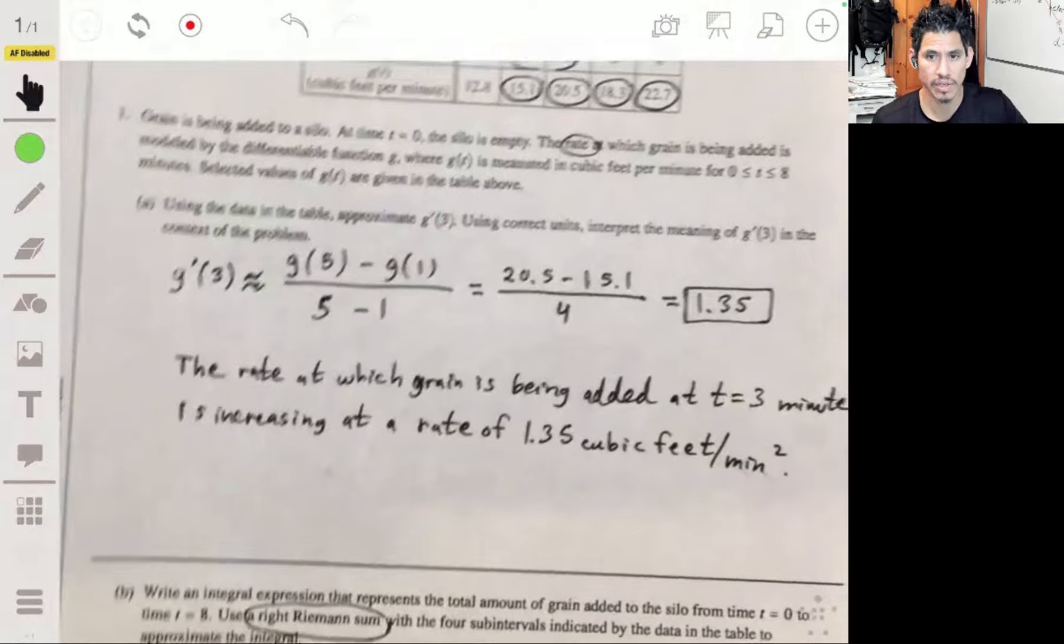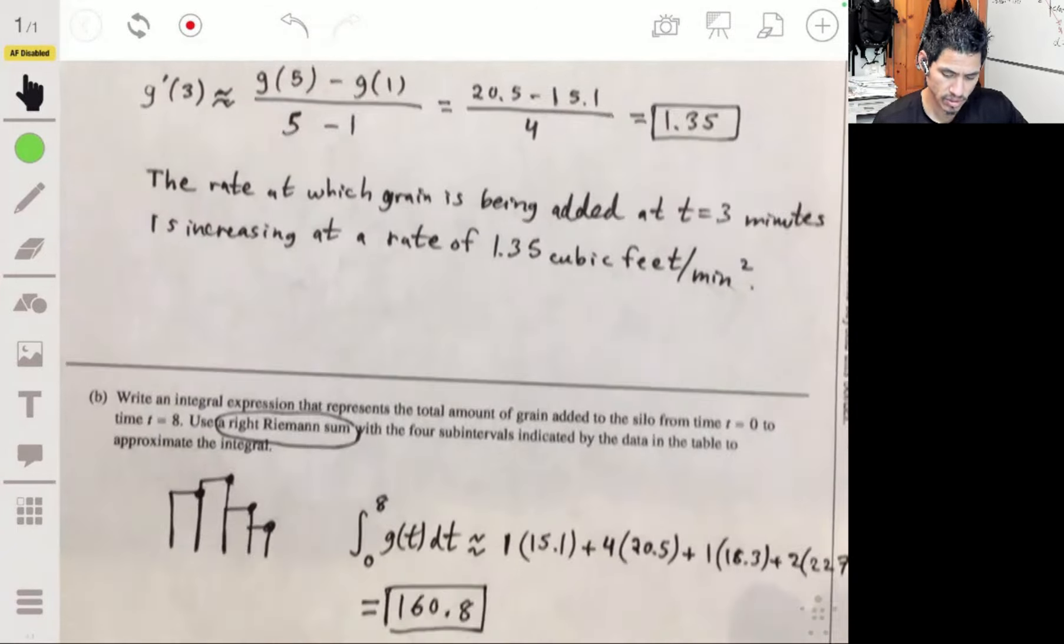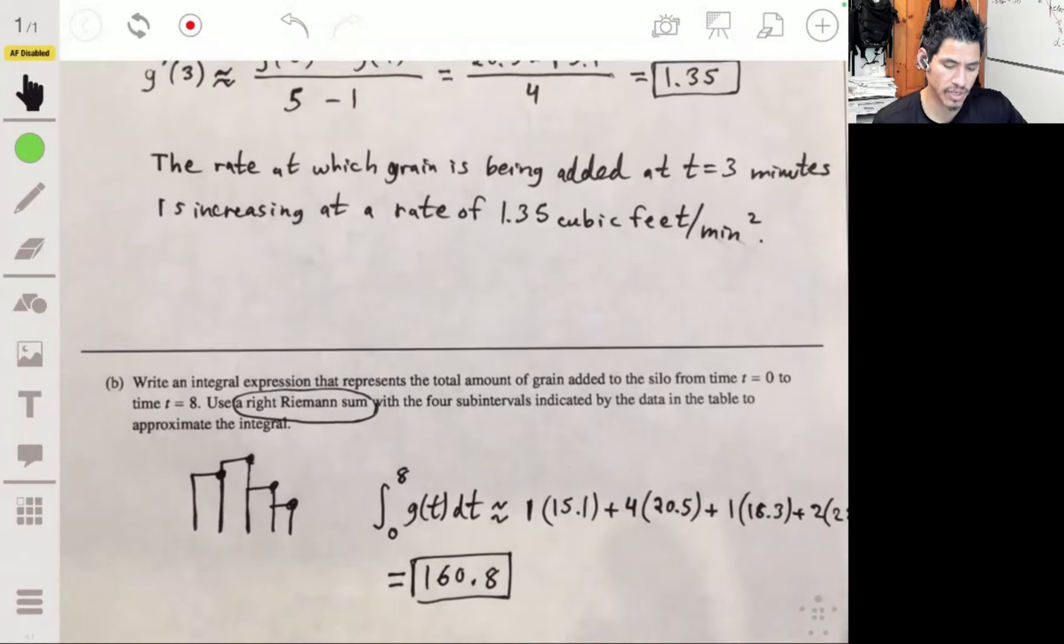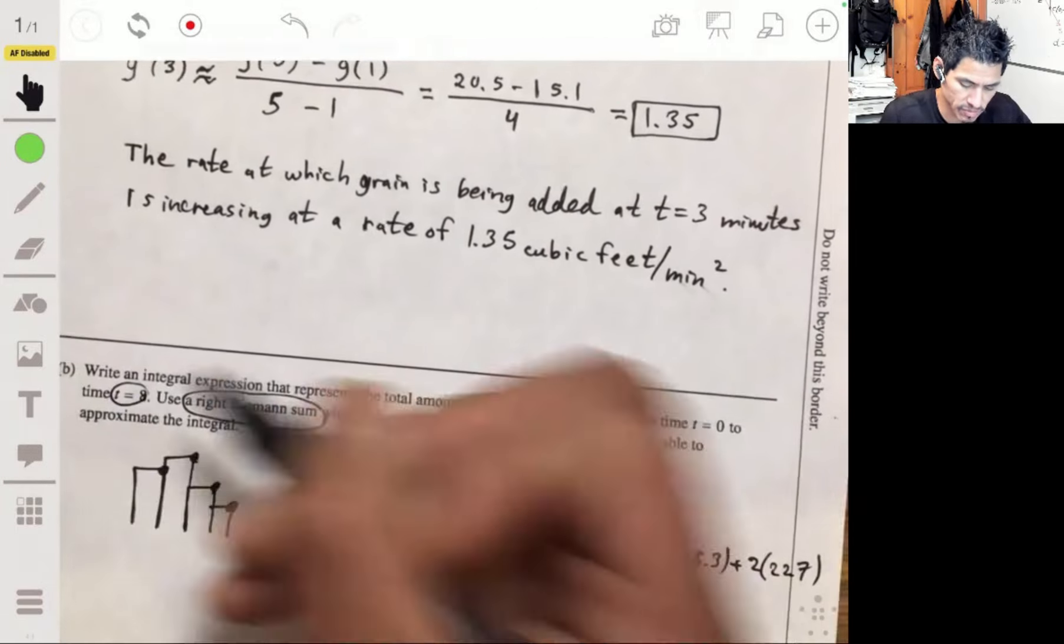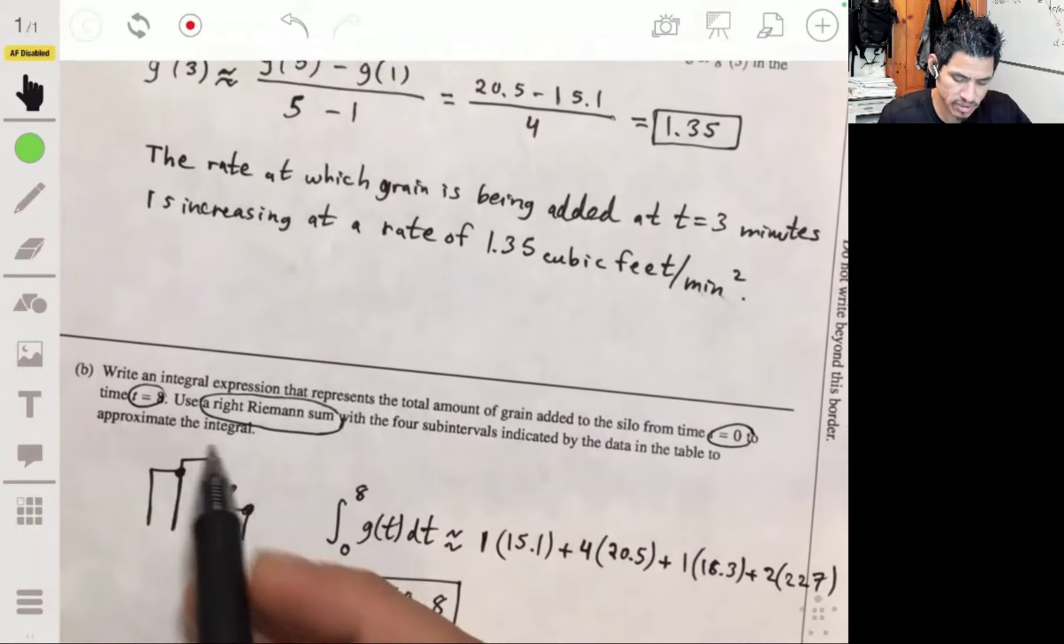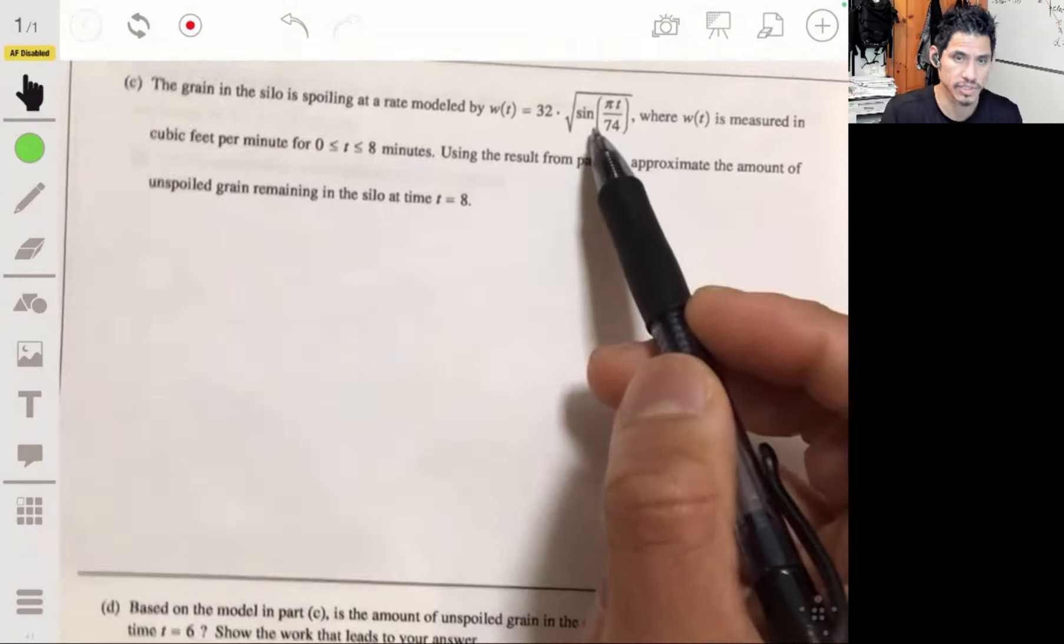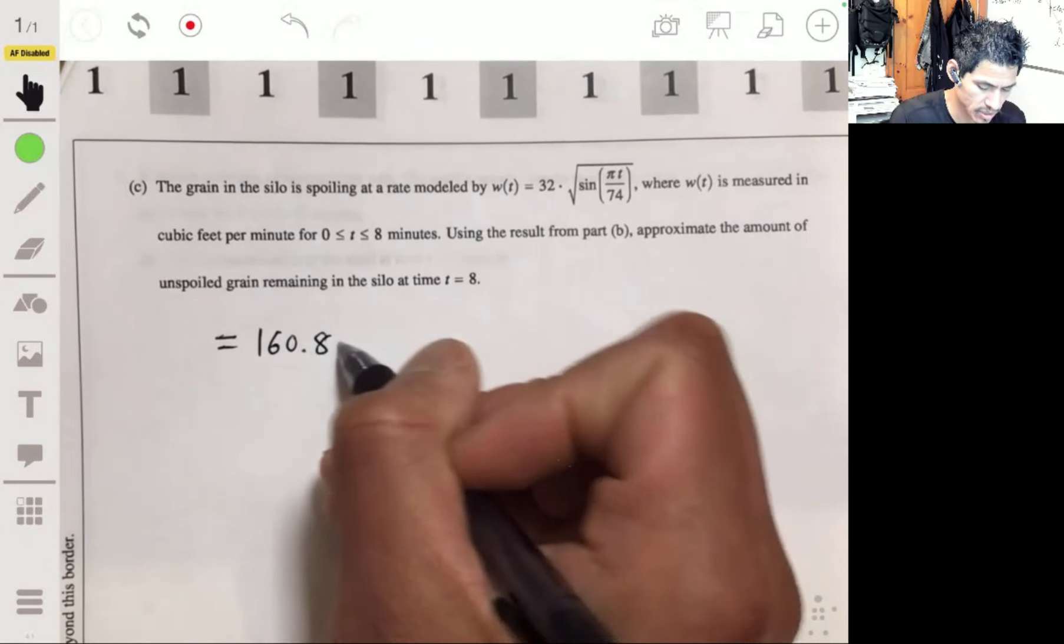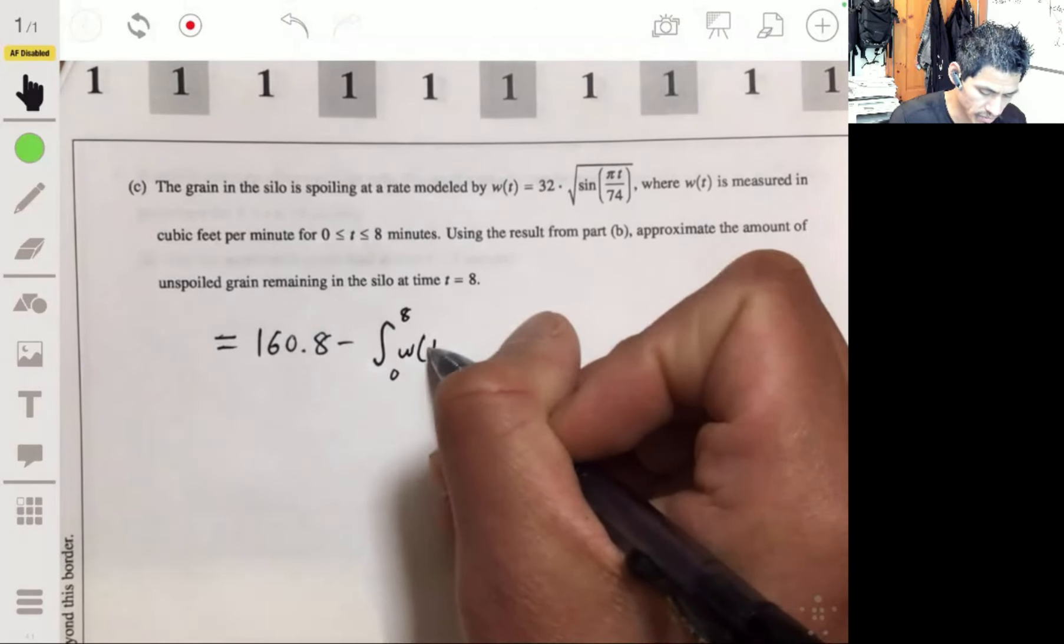So in part B we already found that, let's see, part B we found that there's 160.8 cubic feet of grain that was being added from zero to eight minutes. So we're going to take this amount and subtract the integral of this. So we're going to get 160.8 minus integral from zero to eight of W of T DT.